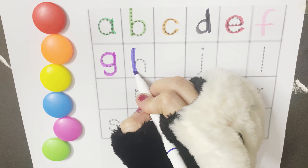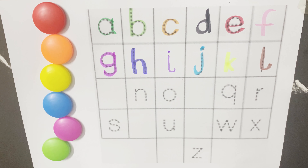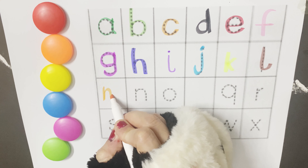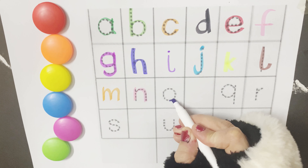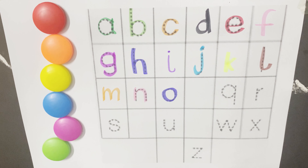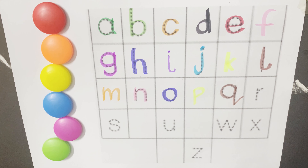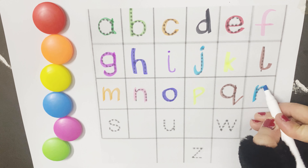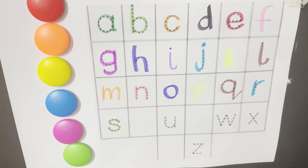G for Gorilla. H for House. I for Igloo. J for Jelly. K for Kite. L for Lion. M for Moon. N for Nose. O for Octopus. P for Peanuts. Q for Queen. R for Rose. S for Sun.